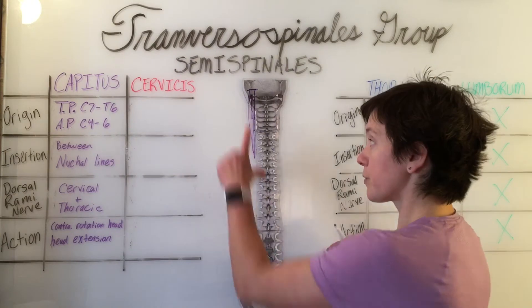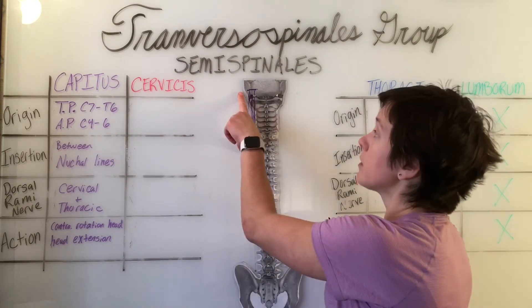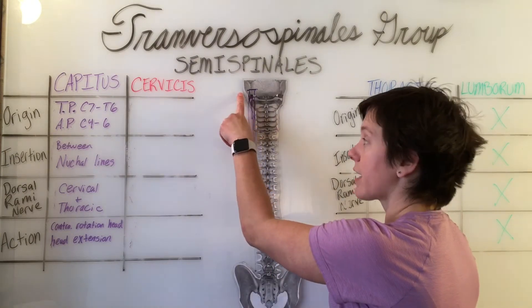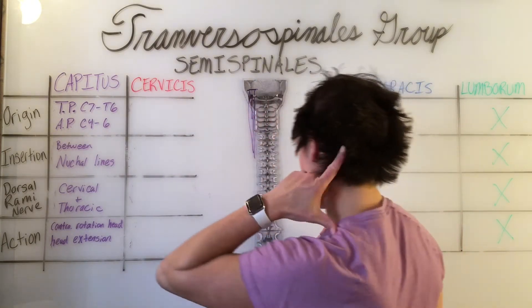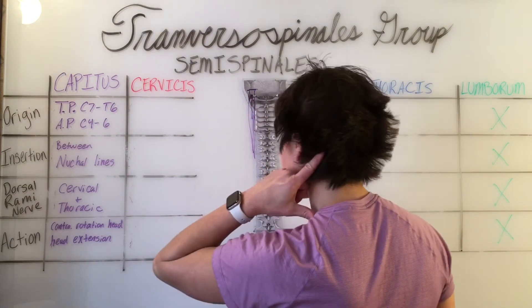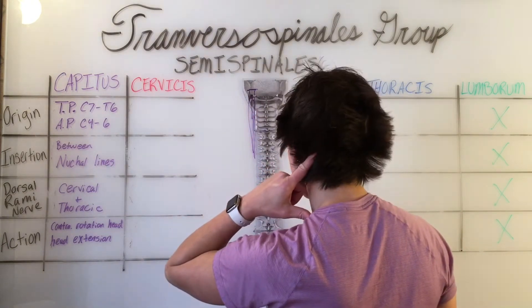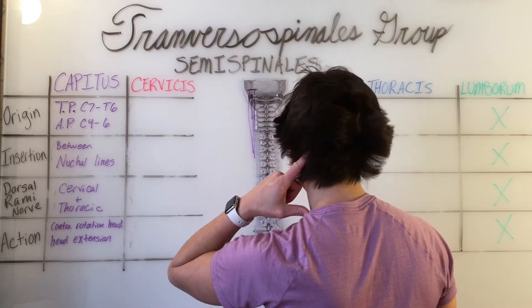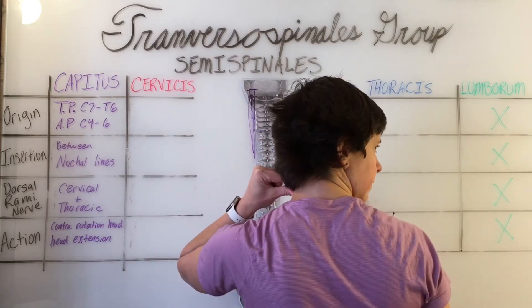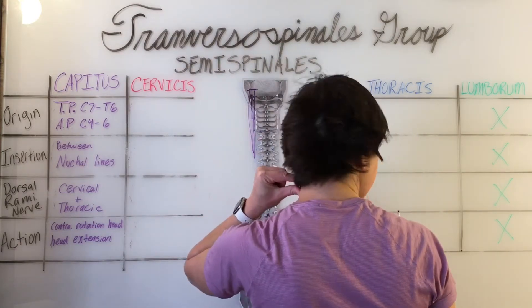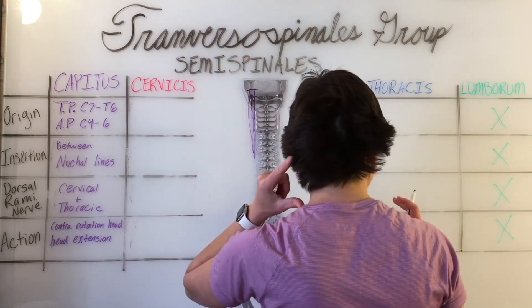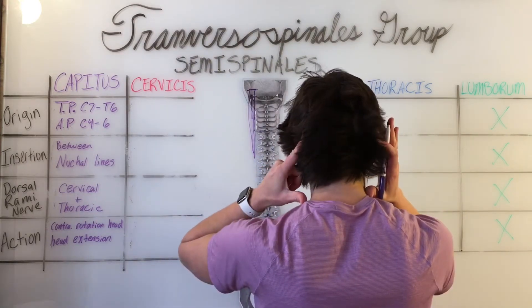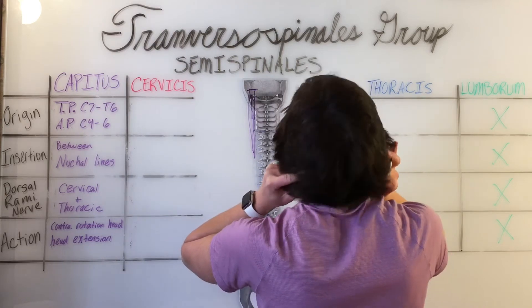So for this semispinalis capitis, contralateral rotation would be this, and then with bilateral contraction it will do head extension.